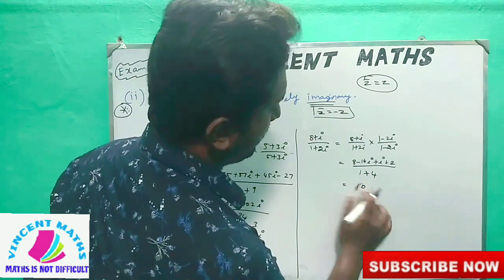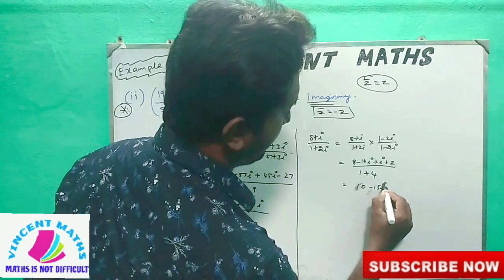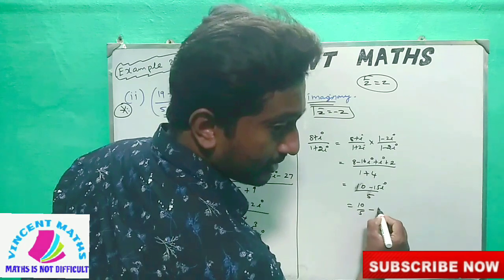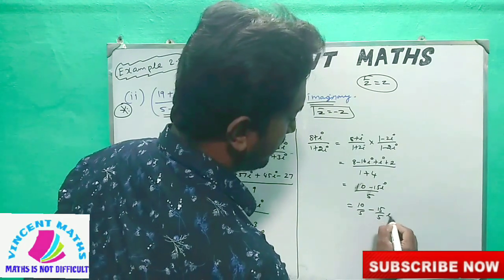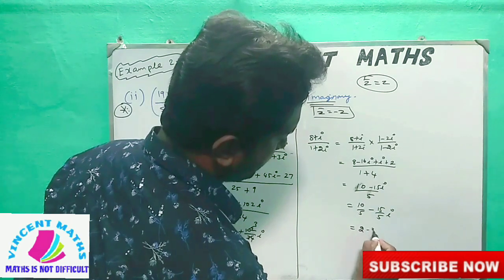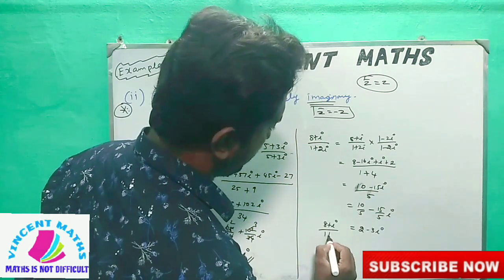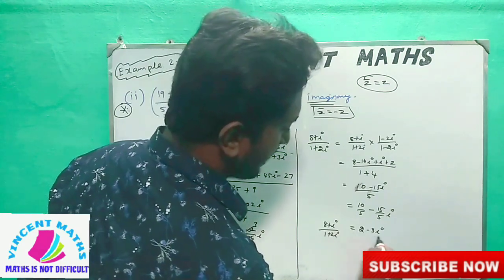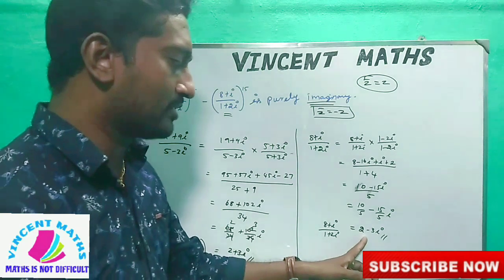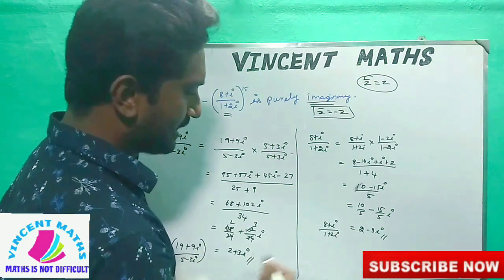Here: minus 59 divided by 5, this number separated as 10 by 5, minus 15 by 5i. Divide — the answer is 2 minus 3i. For (8 plus i) divided by (1 plus 2i), the answer is 2 minus 3i. This is rectangular format.